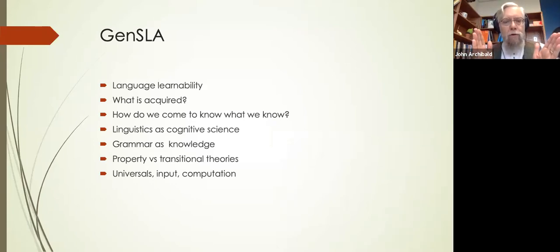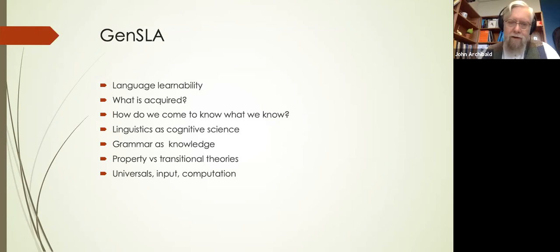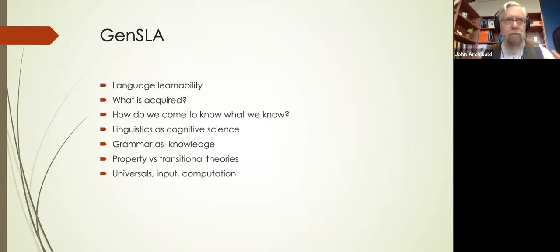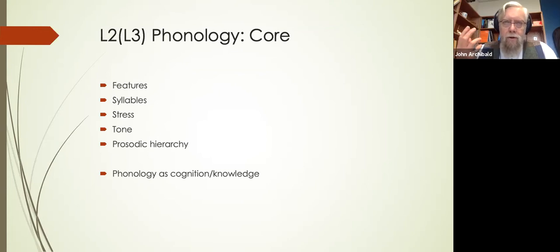We need to account for both property theories of grammatical knowledge in the phonological domain and transitional theories that can explain why learners move through the stages they move through. All of these things together — the modest goals of generative SLA — try to weigh the contributions of language universals, the role of input, the role of computation, and the role of general cognition.